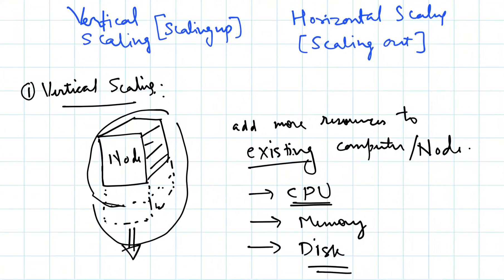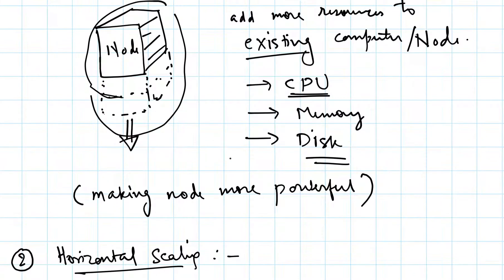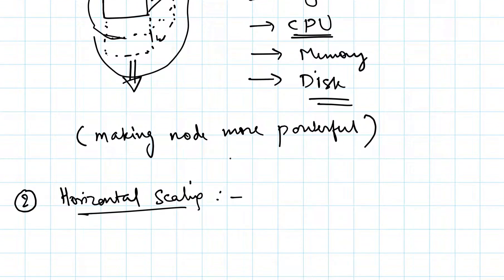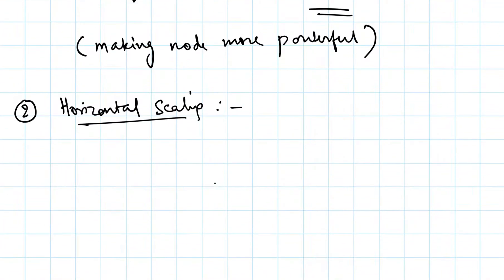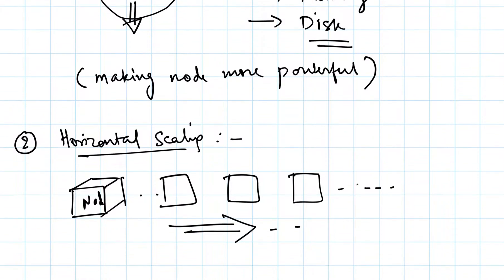On the other hand, what is horizontal scaling? Instead of increasing the power of the existing system, we add more systems. So we have one system or one node, and we add more such nodes. We are scaling out, scaling horizontally. Here we were scaling vertically.